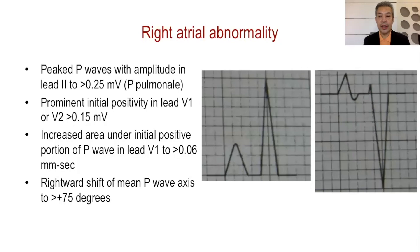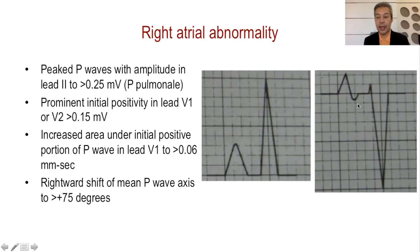Right atrial abnormality is different because instead of making the P wave wider, it becomes taller. Again, look at lead 2 and lead V1. There is peaking of the P waves, which should normally be less than 2.5 small squares. In right atrial abnormality it is more than that — this is P pulmonale or a peaked P wave in lead 2. If you look at lead V1, it is the initial part of the P wave that is affected and the terminal part is normal. The area under the initial deflection is greater than 0.06, and there is a rightward shift of the axis.